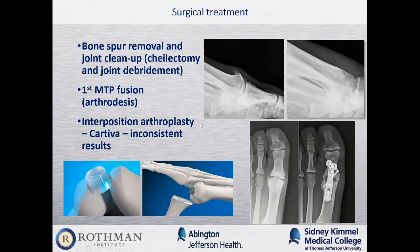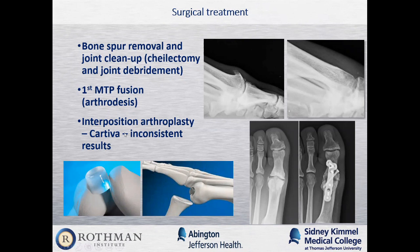A first MTP fusion or arthrodesis is for more advanced cases — any remaining cartilage is removed and screws or a plate are placed to hold the joint while the body fills it in with solid bone, eliminating the joint to relieve pain. An interposition arthroplasty is an option for a small percentage of patients. The Cartiva device, a small plug used as an interposition, had encouraging initial studies but inconsistent results in practice, so I've moved away from offering it.